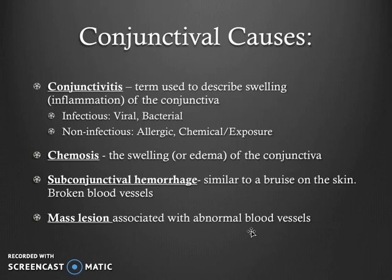Let's discuss conjunctival causes, and first we'll discuss some terminology. Conjunctivitis is a term used to describe swelling or inflammation of the conjunctiva, or the skin of the eye — it can be infectious or non-infectious. Chemosis is the swelling or edema of the conjunctiva, which can be related to conjunctivitis or other processes. Subconjunctival hemorrhage is similar to a bruise on the skin and is related to broken blood vessels. There can also be mass lesions associated with abnormal blood vessels.